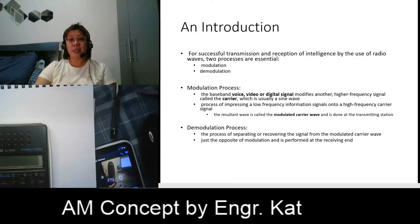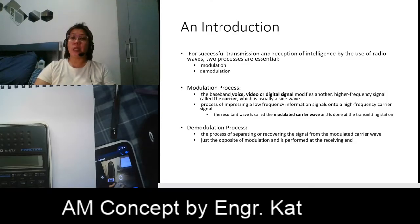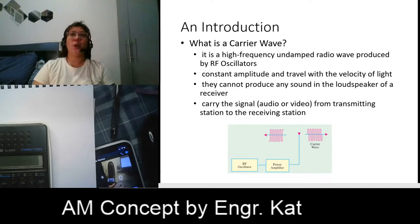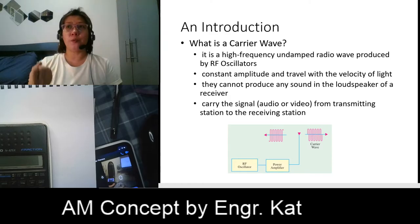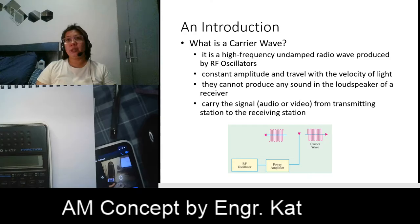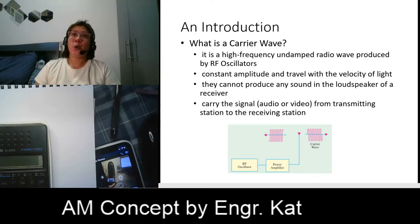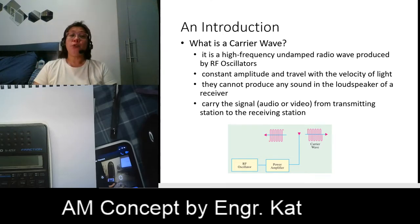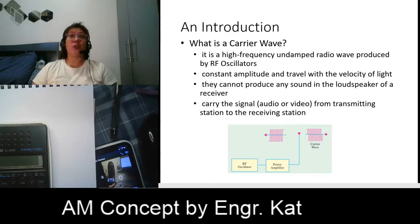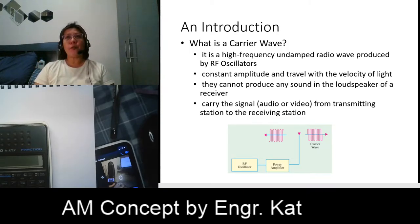If modulation is performed at the transmitting end, then demodulation is performed at the receiving end. A carrier wave is a high frequency undamped — meaning not varying, constant amplitude — radio wave produced by RF oscillators. Oscillators are circuits capable of producing waveforms. Since carrier waves are in the form of a sinusoidal waveform, the type of oscillators we use are sinusoidal or harmonic oscillators, which are capable of producing sinusoidal waveforms.